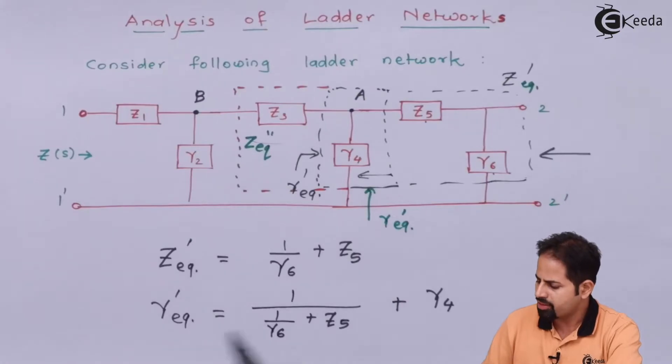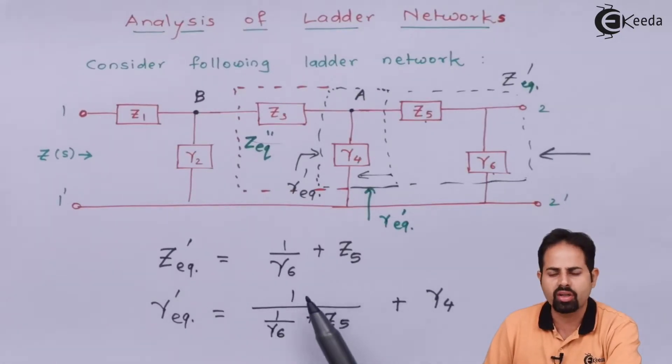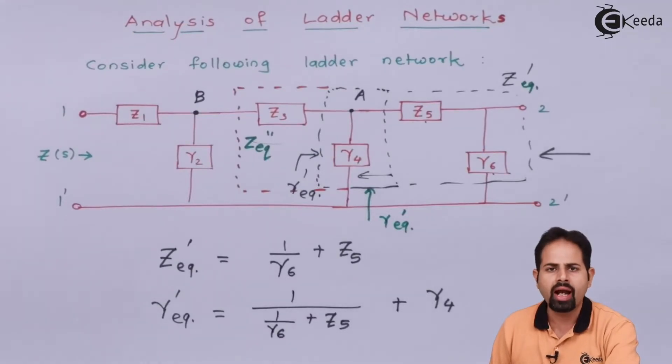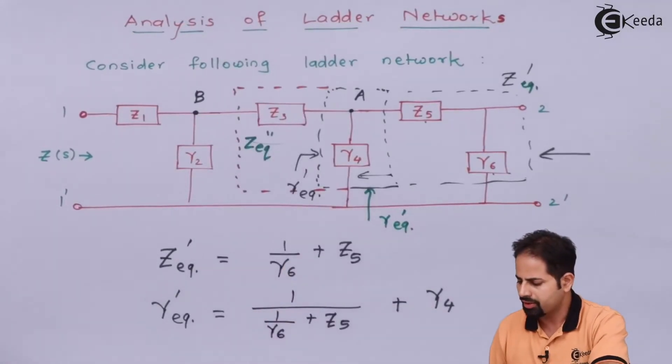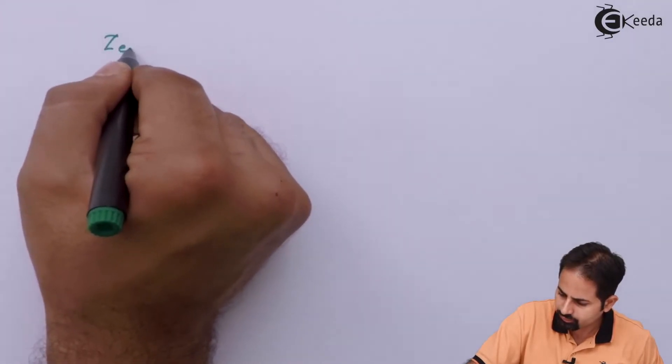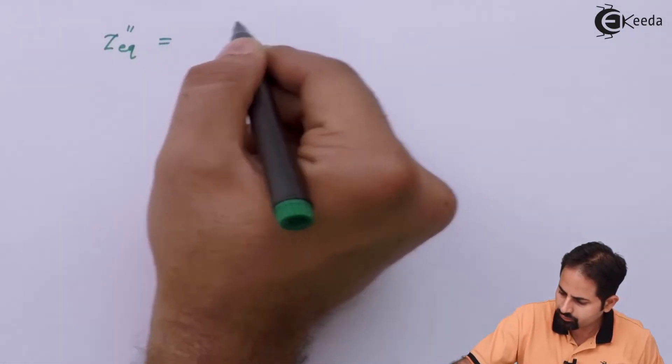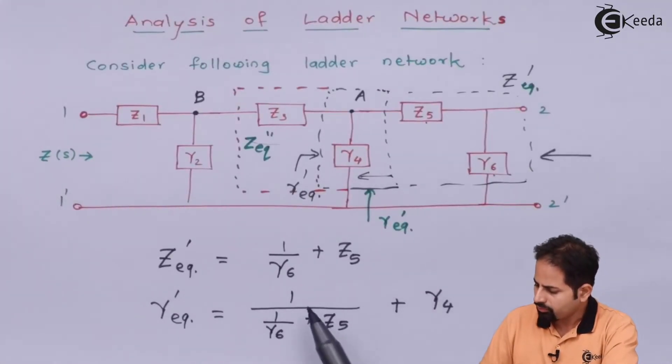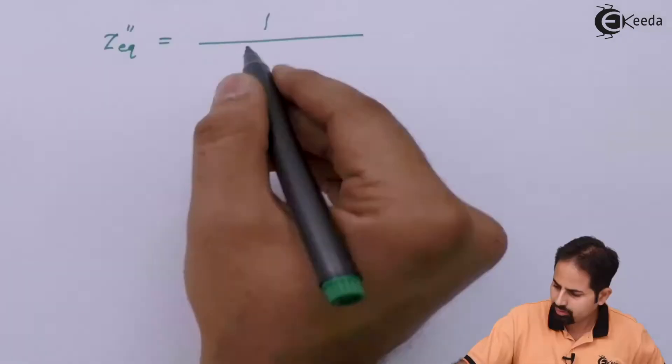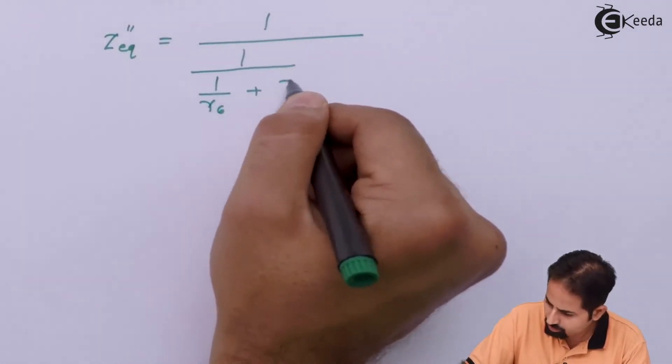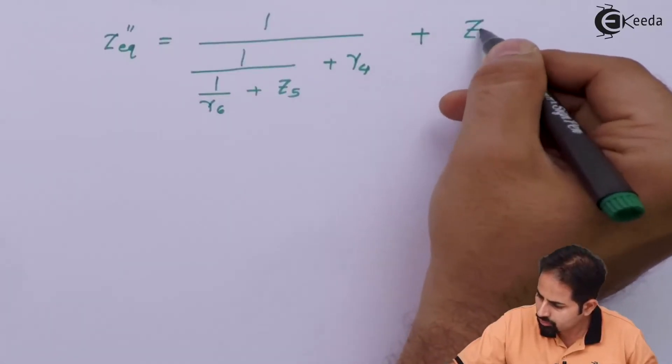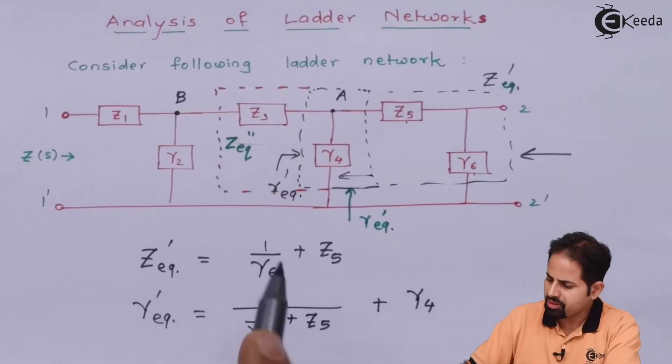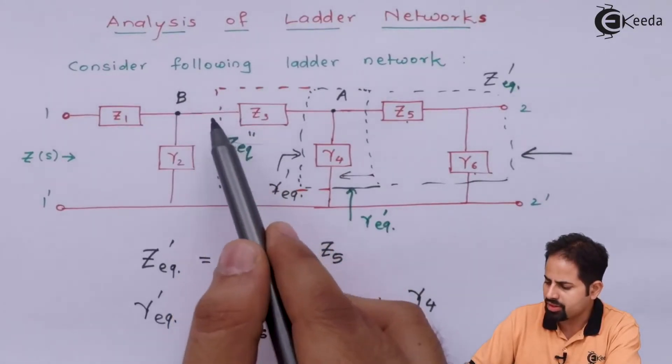So Z equivalent double dash will be the reverse of this or inverse of this plus Z3. So we will take 1 over this term and we will add with Z3. So 1 divided by this particular term, we will take everything. So we have got this Z equivalent double dash, that means we have covered up to point B or this region.